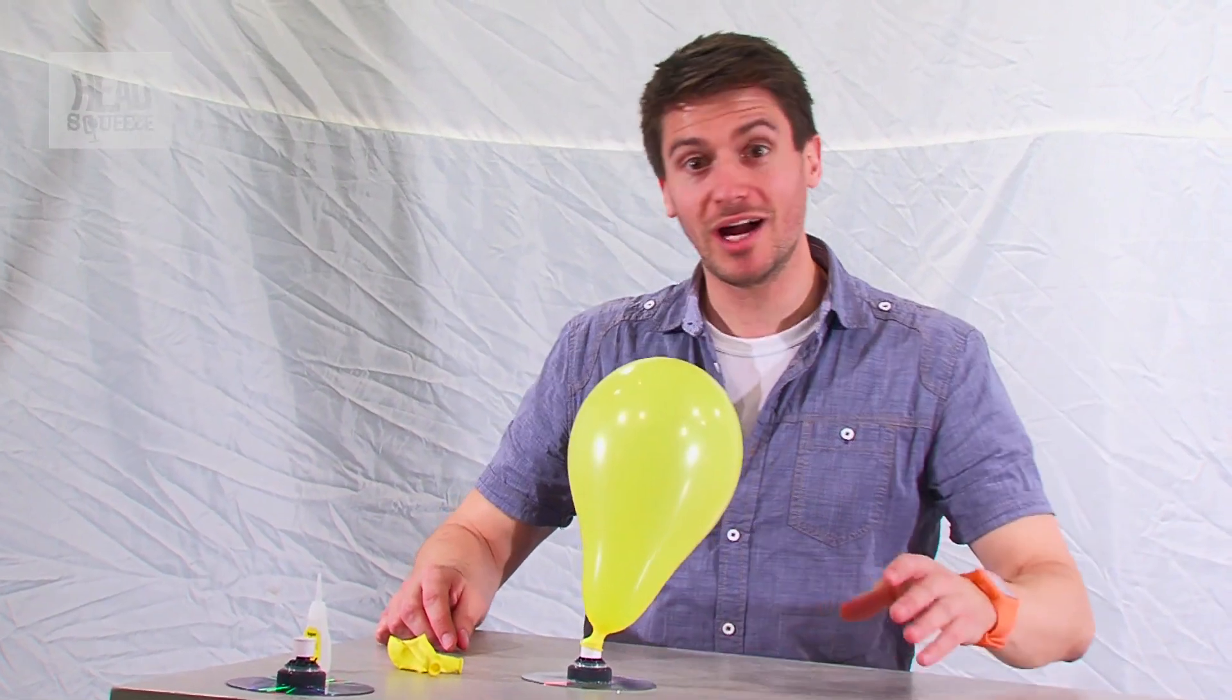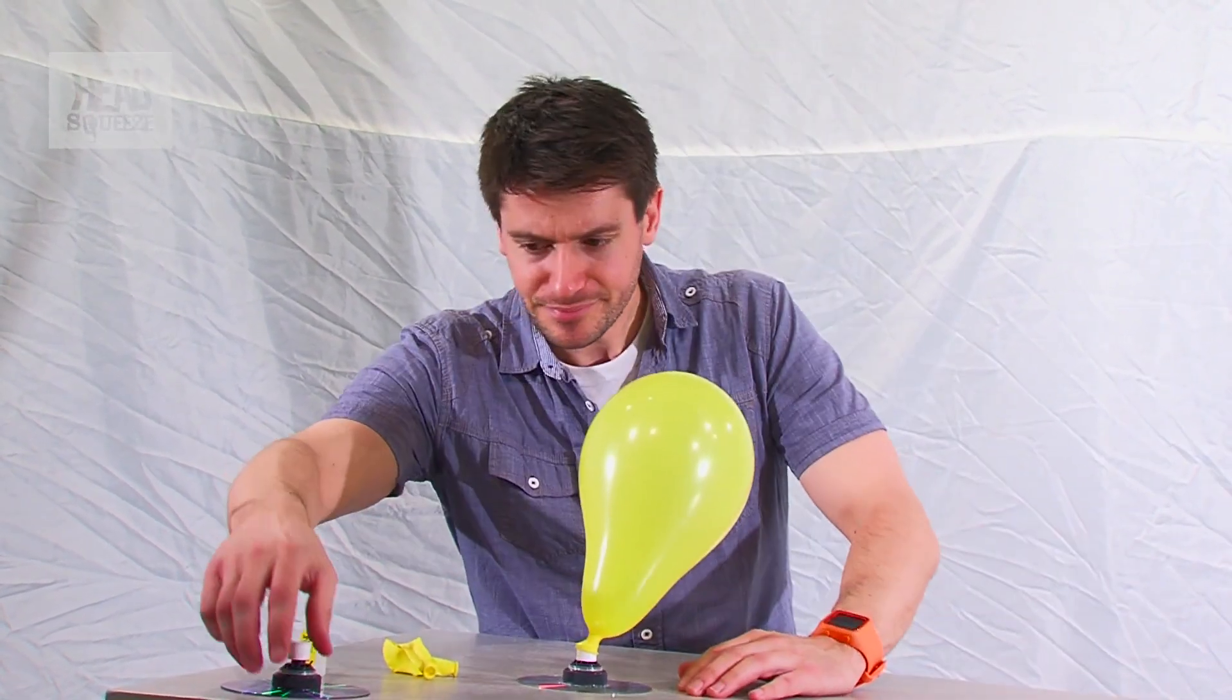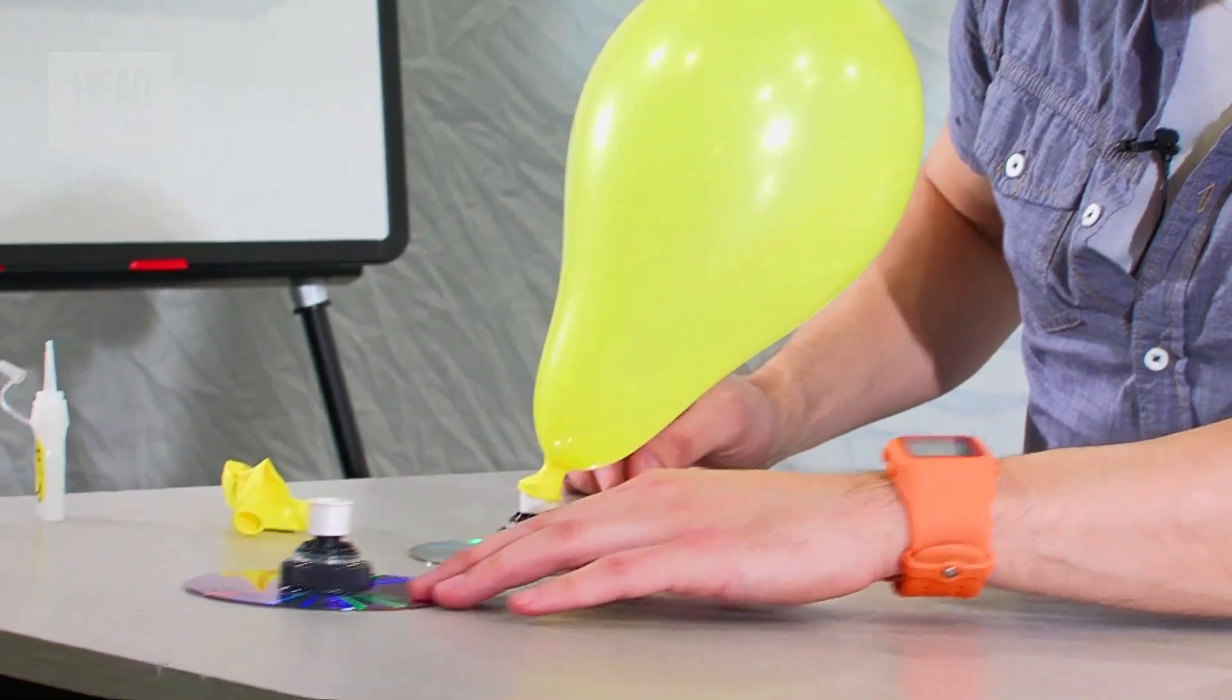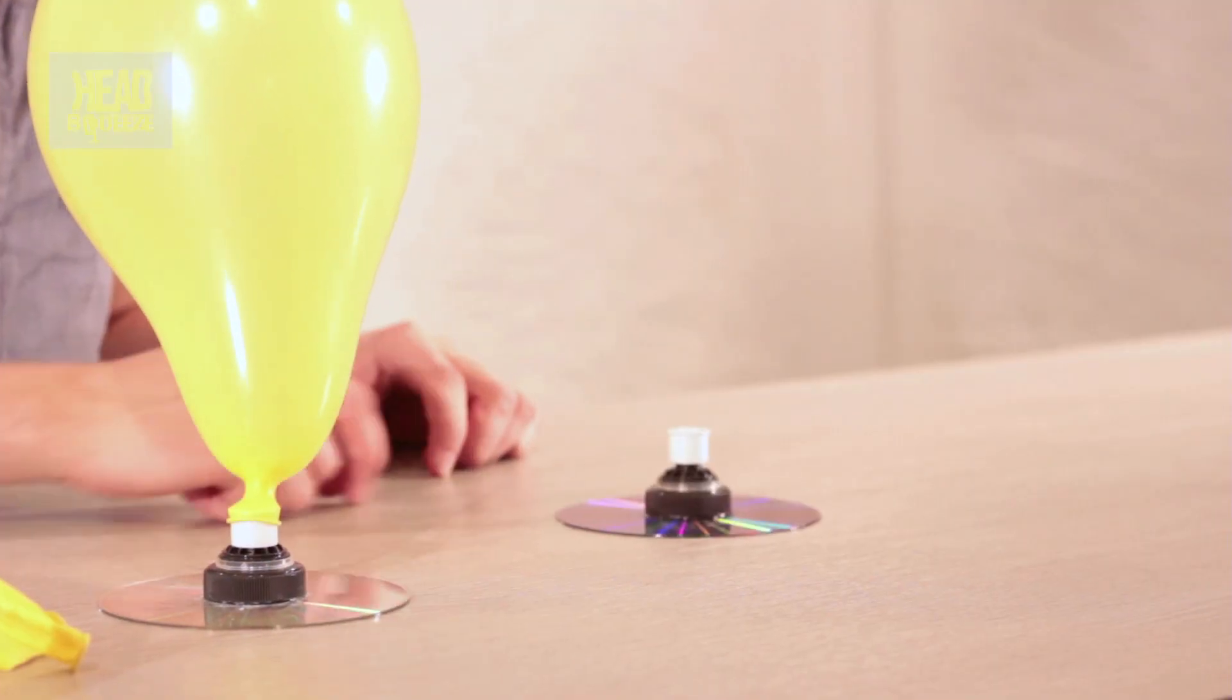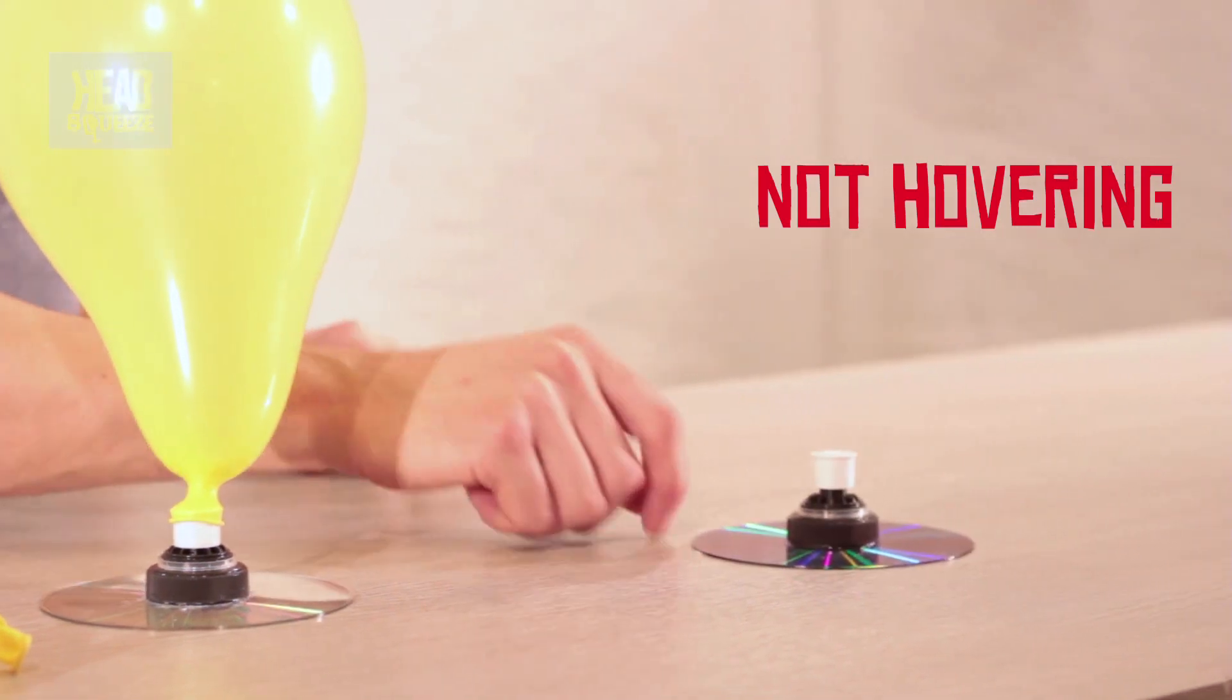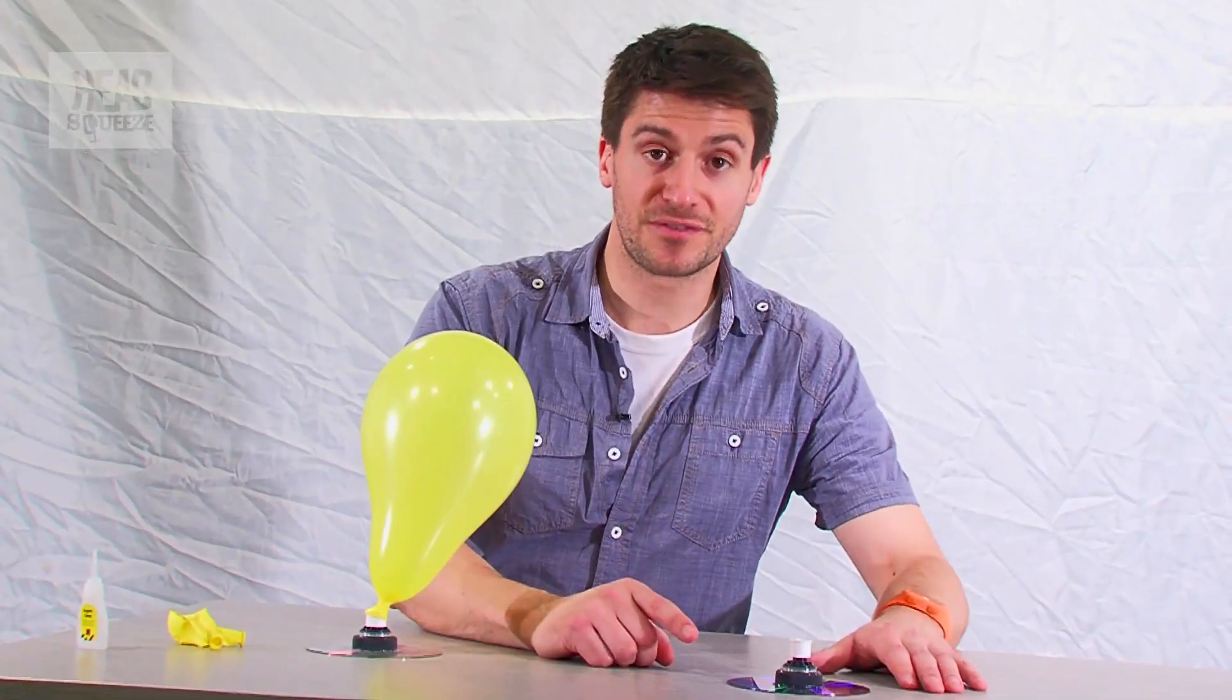Now before we see what happens when we open up the valve and let the air out, if we use our drying example here from earlier, if I just flick this CD around the table it doesn't move very far before it stops and that's because of friction.